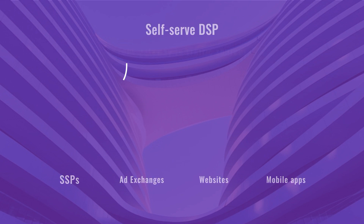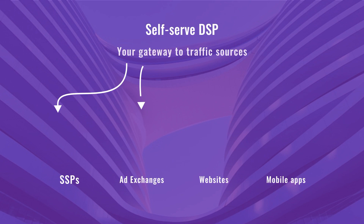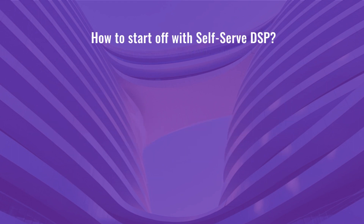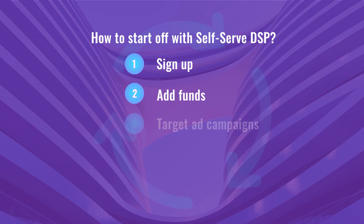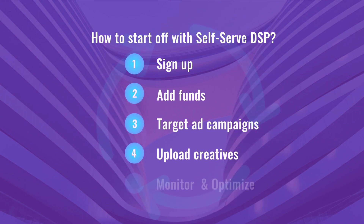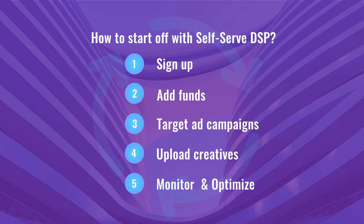Aside from great ad functionality, a self-serve DSP is a gateway to hundreds of traffic sources. Among them, you'll find supply-side platforms, ad exchanges, websites, and mobile apps. To start buying all the traffic, all you need to do is sign up, add funds to your account, target your ad campaigns, upload creatives, and start monitoring the performance.